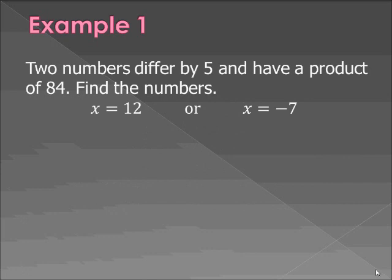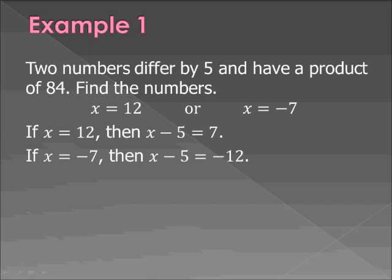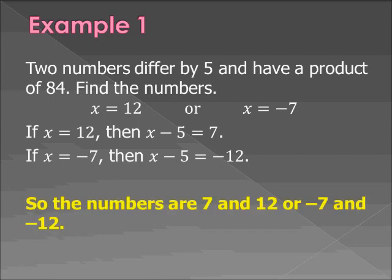All right. So these are our two x's, 12 and negative 7. Since I use x minus 5 as the smaller number and x as the larger number, if x is 12, then x minus 5 is 7. If x is negative 7, then x minus 5 is negative 12. So our numbers are either 7 and 12 or negative 7 and negative 12. And if you use x plus 5 for the larger and x for the smaller, you would have gotten the same answer.